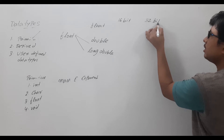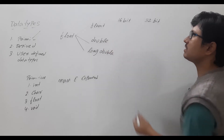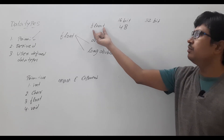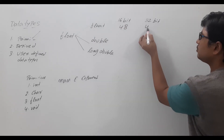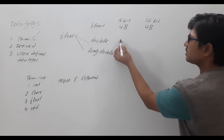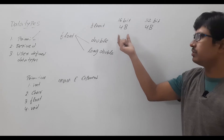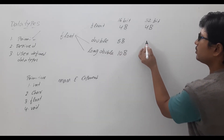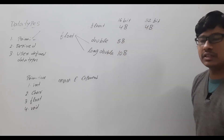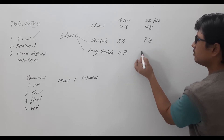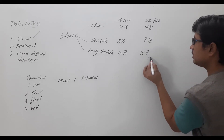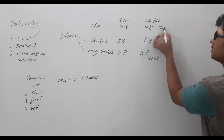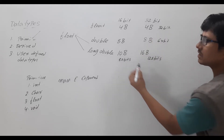We will discuss how much memory is allocated for each type in 16-bit and 32-bit compilers. For a 16-bit compiler: float allocates 4 bytes (32 bits), double allocates 8 bytes (64 bits), and long double allocates 10 bytes (80 bits). For a 32-bit compiler: double is 8 bytes (64 bits) and long double is 16 bytes (128 bits), while float remains 4 bytes (32 bits).